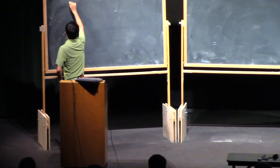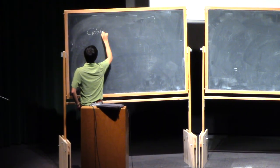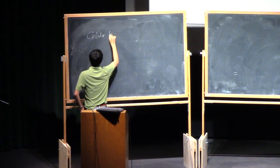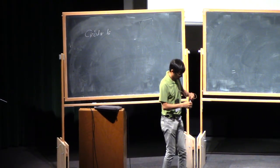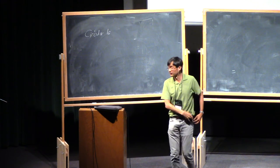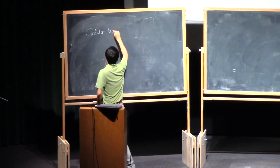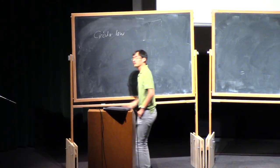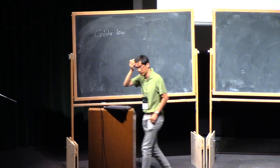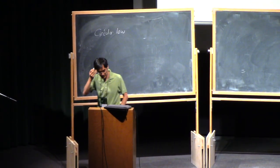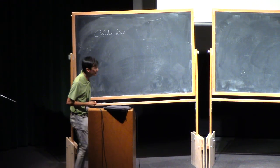Today we're going to cover the circular law, which you can think of as the non-Hermitian analog of the semi-circle law. Of course, we've seen the semi-circle law many times already.